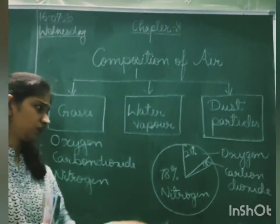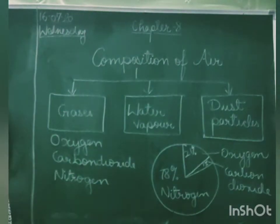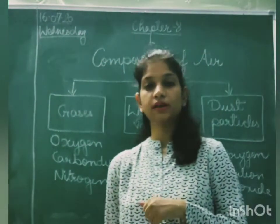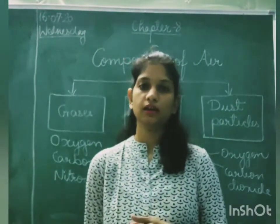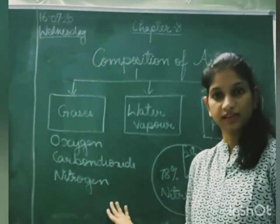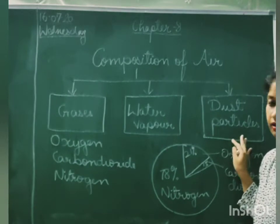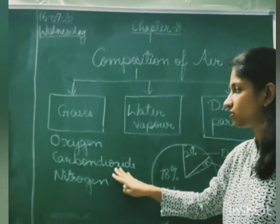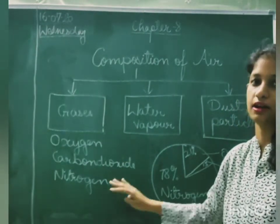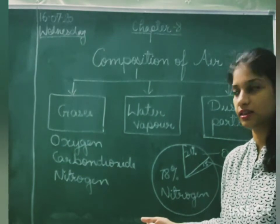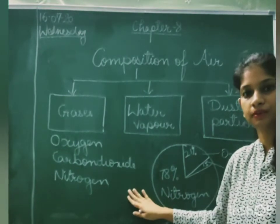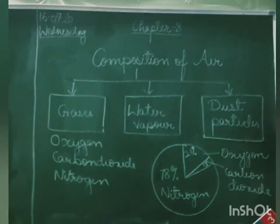Oxygen is used by us, and carbon dioxide is also used by the plants. Nitrogen is also used by the plants, but not directly. So air is basically a mixture of gases, water vapor, and dust particles. In gases, it is a mixture of more than one gas — some of them are oxygen, carbon dioxide, and nitrogen, but there are many more gases present in the air. These three are present in the maximum amount. So this is about the composition of air.